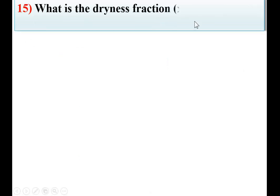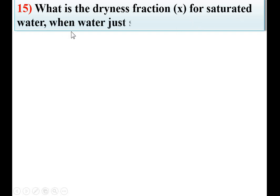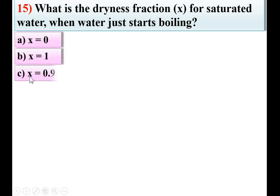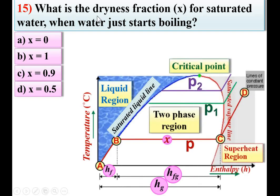Next: what is the dryness fraction for saturated water when water just starts boiling? Options: X = 0, X = 1, X = 0.9, or X = 0.5. At point B on the figure, water just starts boiling, and up to C water boils. At this point the dryness fraction is equal to 0. A is the right answer.